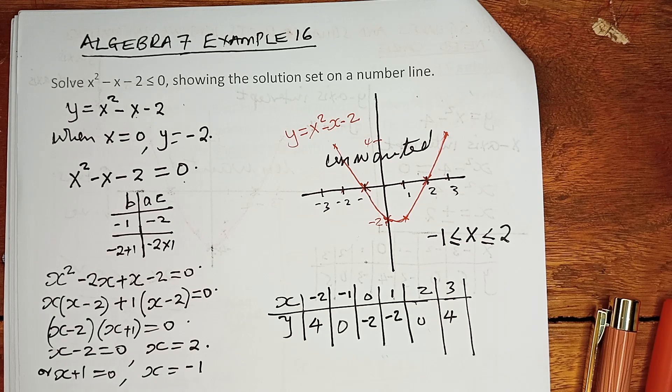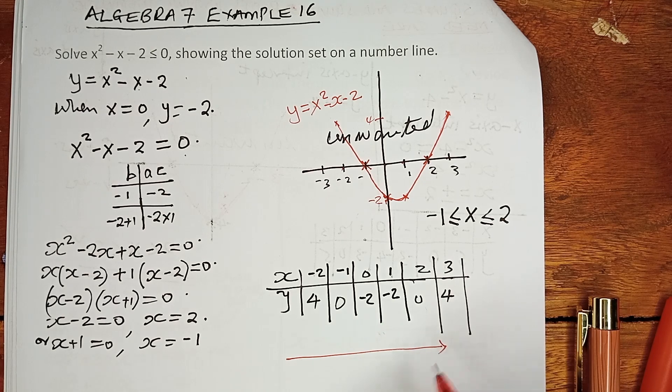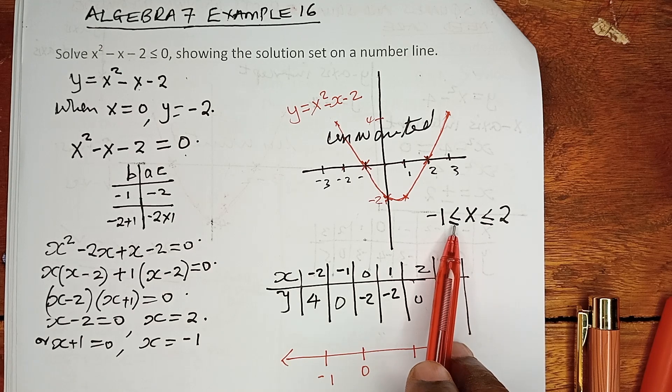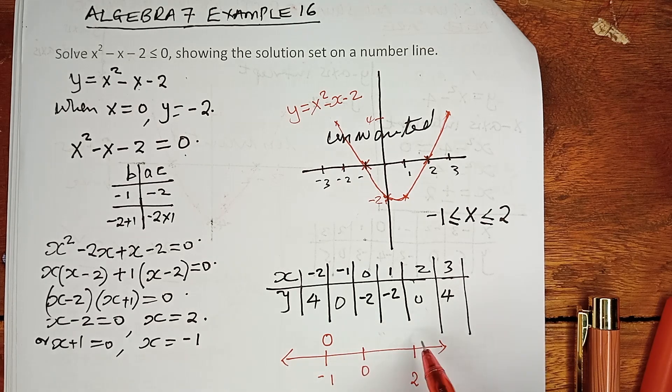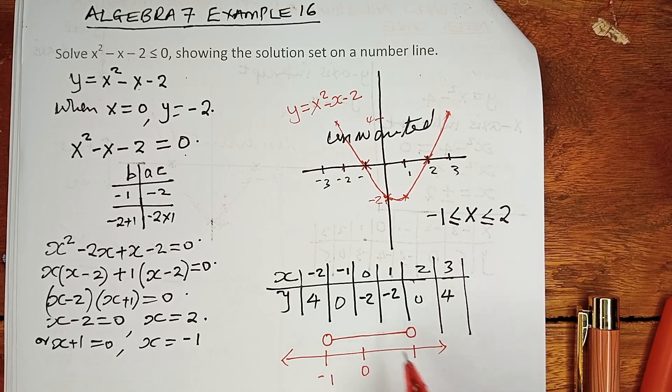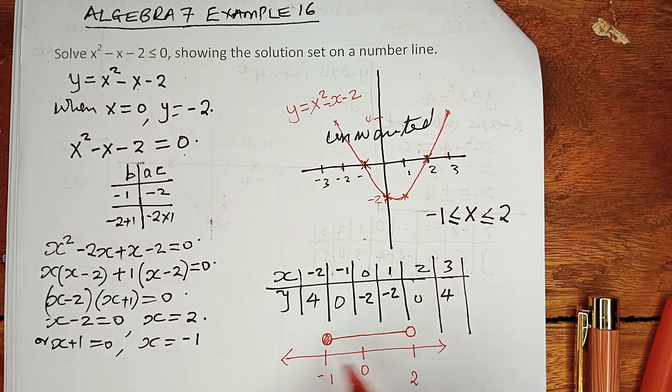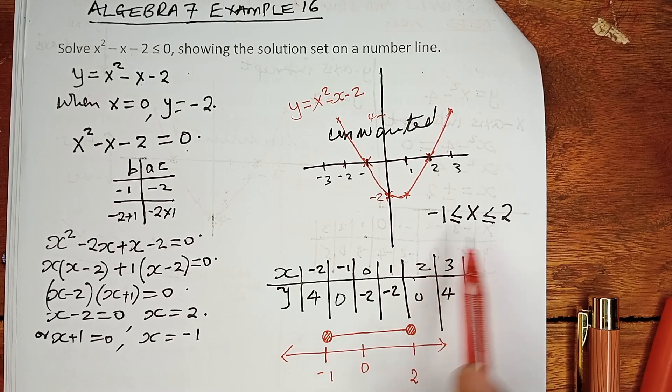But we are also told that the question asks us to show the solution set on a number line. So that is the number line. We have 0, we have negative 1, and we have 2. And because of this inequality, less than or equals to, x can be negative 1, moving forward, the upper limit is 2. This can be the possible values of x within this region. And because of the existence of equals to, these limits are shaded, meaning they are also included in the answer.